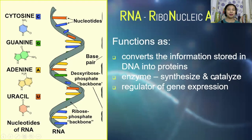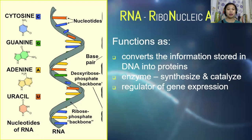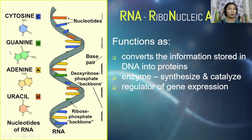Now let's proceed. RNA stands for ribonucleic acid. They function as storage of the information from the DNA. In the central dogma of life, the primary role of RNA is to convert the information stored in DNA into proteins. They also act as enzymes and regulators of gene expression. Notice that the shape of RNA is a single helix, and it also contains four nitrogenous bases, namely cytosine, guanine, adenine, and uracil. The adenine joins with uracil and guanine joins with cytosine.